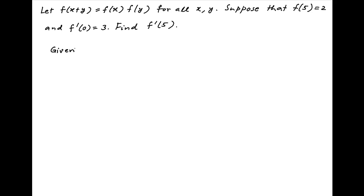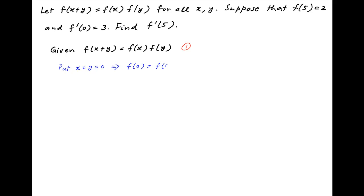We are given that f(x+y) = f(x)·f(y) for all values of x and y. Let's call this equation 1. Put x = y = 0; equation 1 becomes f(0) = f(0)·f(0). Moving all terms to the left-hand side and taking f(0) common, we get f(0)·(1 - f(0)) = 0. This implies that either f(0) = 0 or f(0) = 1.